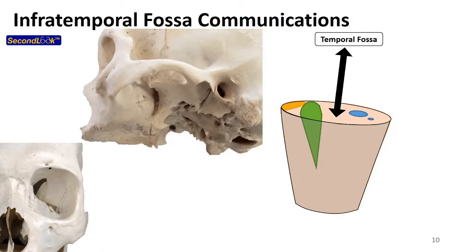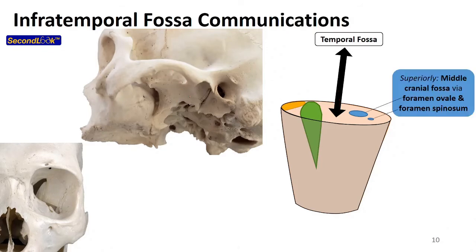The infratemporal fossa has quite a few communications with other spaces. The first is with the temporal fossa — you can imagine a communication between the two fossae, represented on the cup diagram as the superior roof moving back and forth. Superiorly there is also a communication between the infratemporal fossa and the middle cranial fossa, through foramen ovale and foramen spinosum — all the structures we saw passing in and out through those foramina.